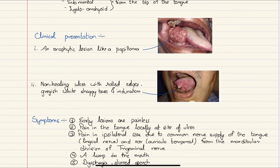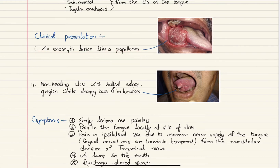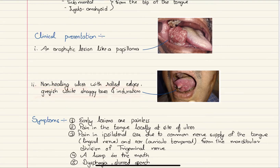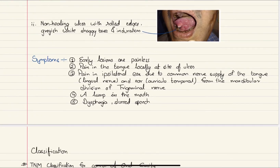The disease might present as an exophytic lesion like a papilloma — as shown in this picture, an exophytic growth on the right side of the tongue — or it might also present as a non-healing ulcer with rolled edges, grayish-white shaggy base, and induration, as shown in this picture.